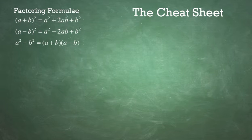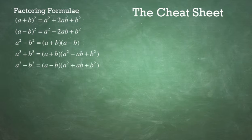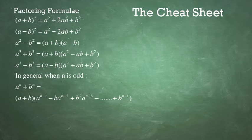The difference of two squares: A squared minus B squared equals A plus B times A minus B. A cubed plus B cubed equals A plus B times A squared minus AB plus B squared. And A cubed minus B cubed equals A minus B times A squared plus AB plus B squared.